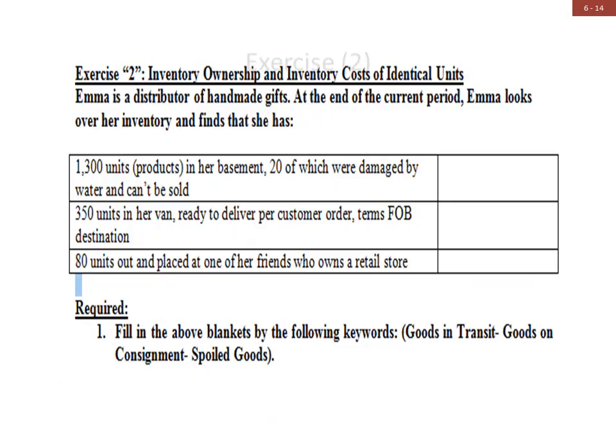Let us now refer to an exercise that is a direct application of the three types of inventory we discussed. Emma is a distributor of handmade gifts. At the end of the current period, Emma looks over her inventory and finds three situations. You are required to fill in the blanks using the keywords: goods in transit, goods in consignment, and spoiled goods.